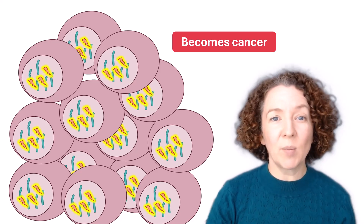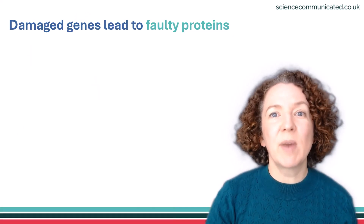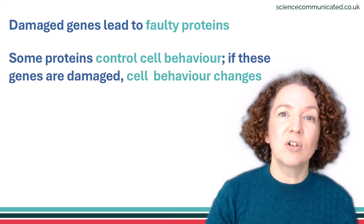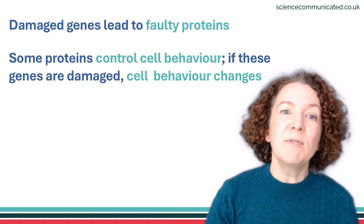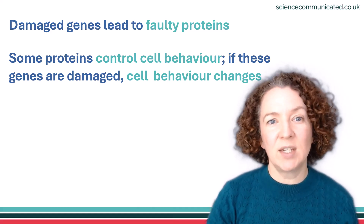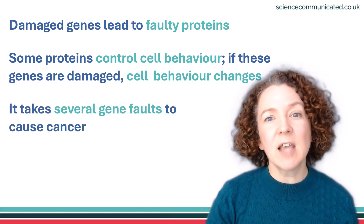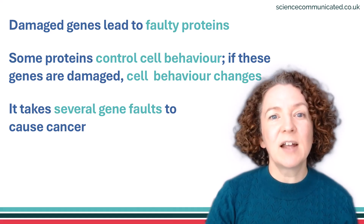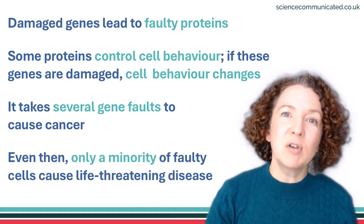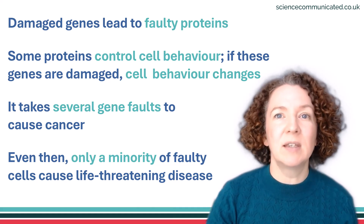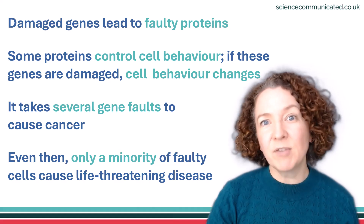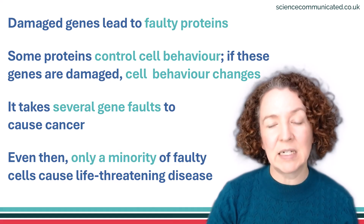To recap: damage to genes causes our cells to make faulty proteins. Some of the proteins in our cells control their behaviour, so if the genes for these proteins get damaged, the cell's behaviour changes. It normally takes several gene mutations for a cell to become a full-blown cancer cell. And even then, they're most likely to die or get destroyed by our immune system. So it's only a minority of faulty cells that have the potential to cause a life-threatening disease.